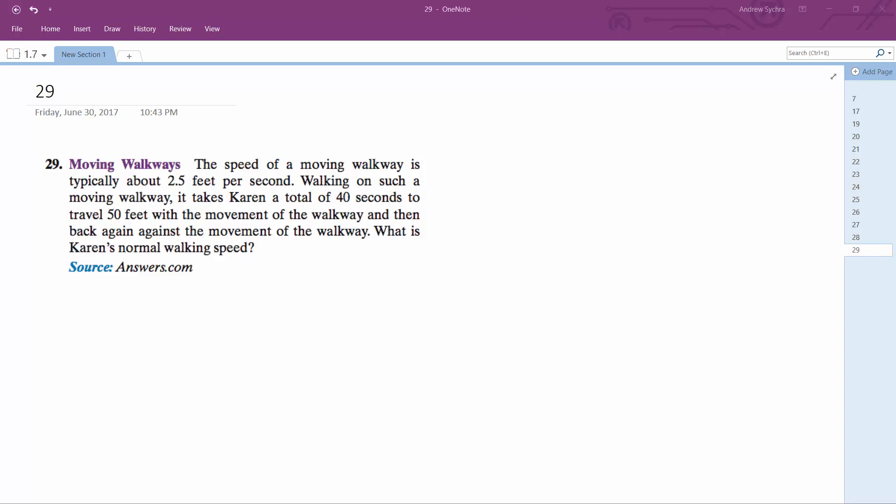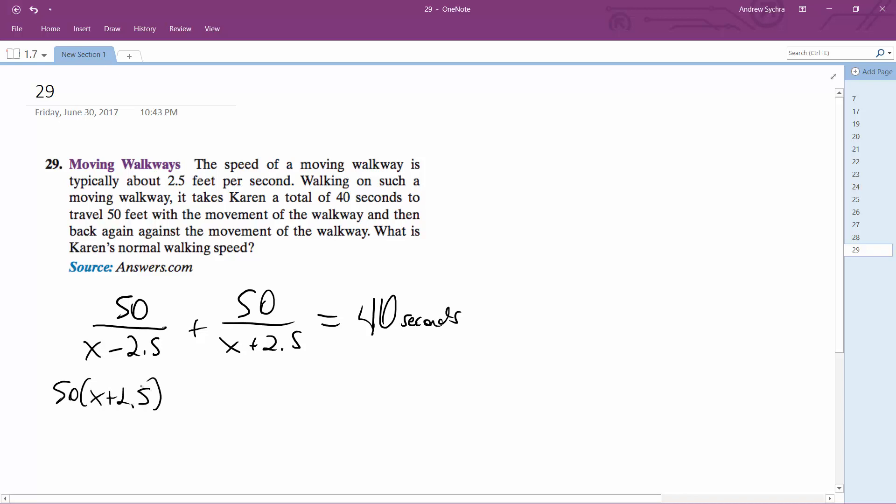So Karen's walking 50 feet against it minus 2.5, walking with the walkway plus 2.5, and then totals 40 seconds. So you multiply these, there's x minus 2.5, x plus 2.5. So you get 50 quantity x plus 2.5 and then plus 50 times x minus 2.5, equals 40 times x plus 2.5 times x minus 2.5.